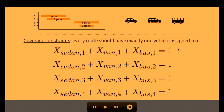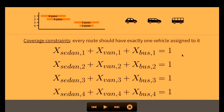Coverage constraints say that every route should have exactly one vehicle assigned to it. There's one constraint for every route, and the constraint says: when you add up all these x's over all vehicles for one particular route, it has to equal 1. This does exactly what we wanted because these are 0,1 valued variables. What this constraint says — for example, for route 1 — is that only one of these can be 1, and in fact precisely one must be 1. So we have one of these for every route. These are the coverage constraints.